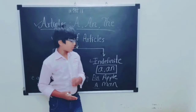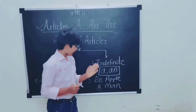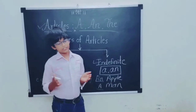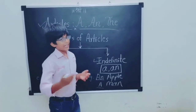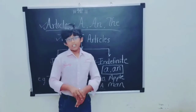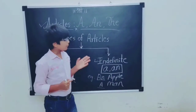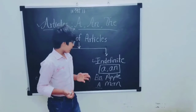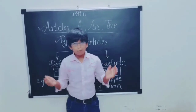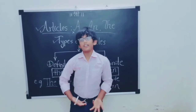For example: 'an apple' — there are a lot of apples and we are talking about any one apple. 'A man' — there are a lot of men and we mean just one man. This was the indefinite article explained with examples.